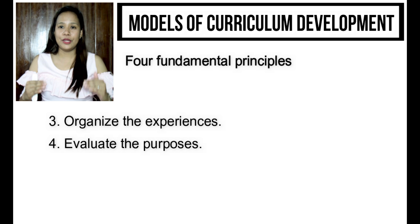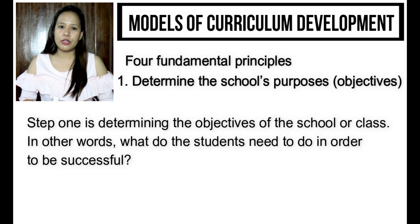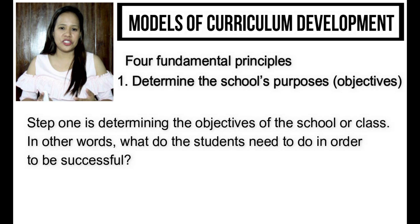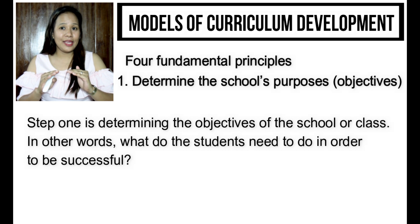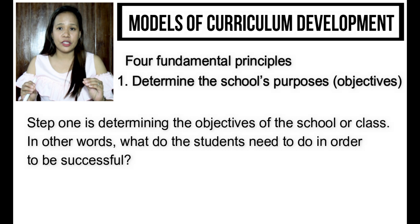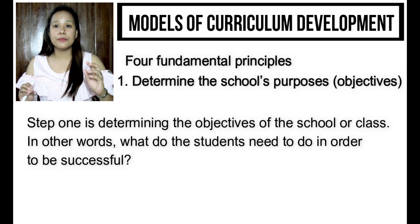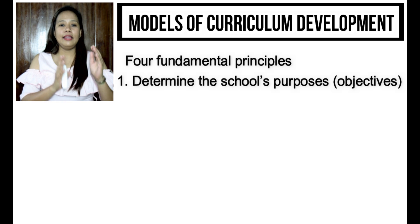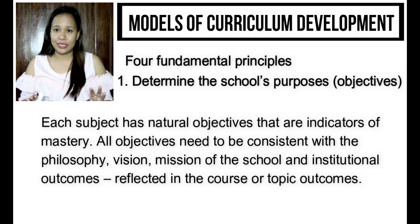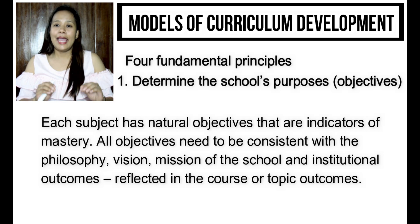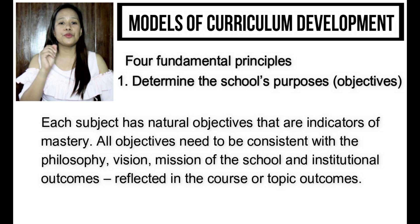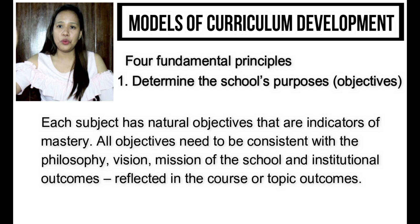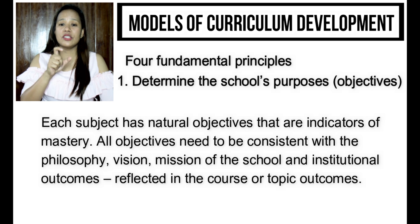Looking closer at the first principle, we focus on the question: what do the students need to do in order to be successful? Each subject has natural objectives — what you call course outcomes — and each objective is also an indicator of mastery. All objectives need to be consistent with the philosophy, vision, and mission of the school, and with the institutional outcomes.